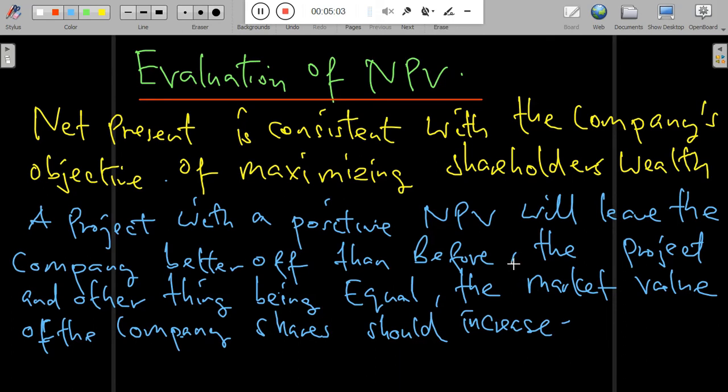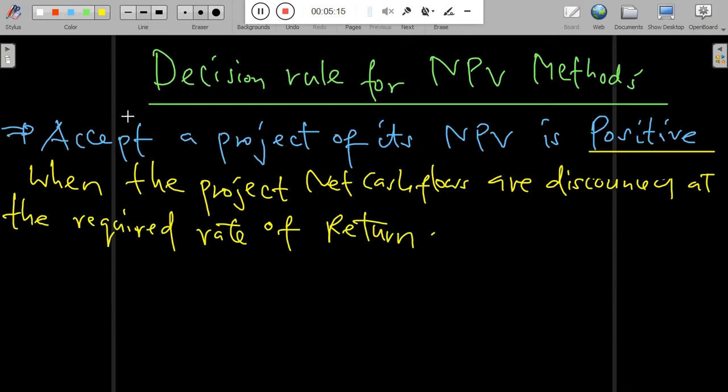A positive net present value implies that the company benefits, and this type of project that is undertaken should continue. Let's look at the decision rule of the net present value method. You should accept a project if its net present value is positive.